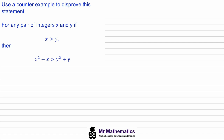In this question we've been asked to use a counter example to disprove this statement: for any pair of integers x and y, if x is greater than y, then x squared plus x must be greater than y squared plus y. We begin by choosing a value of x and y that satisfy this condition. Let's say x is equal to 2 and y is equal to 1, and using these values we know that x is greater than y.